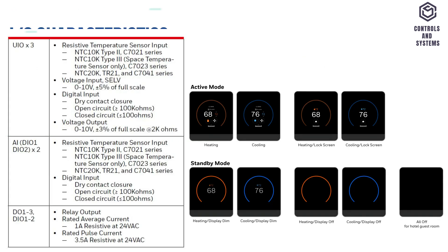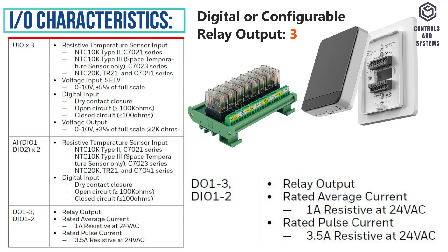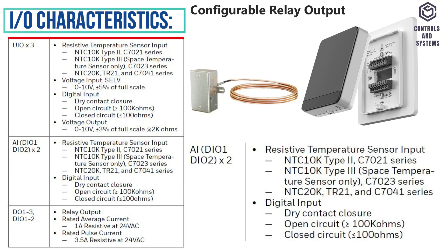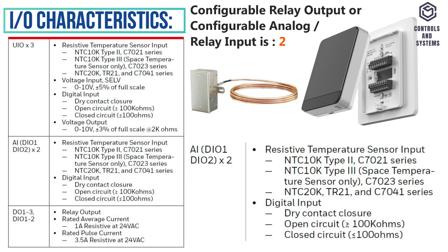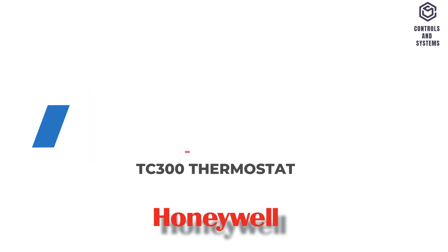Input-Output Characteristics. Universal input and output count is 3. Digital or configurable relay output is 3. Configurable relay output or configurable analog or relay input is 2.